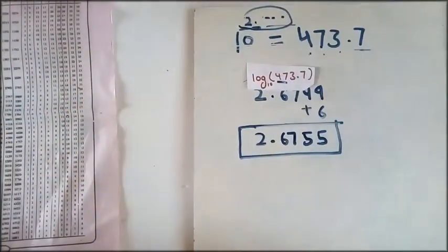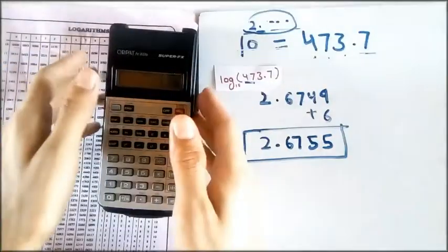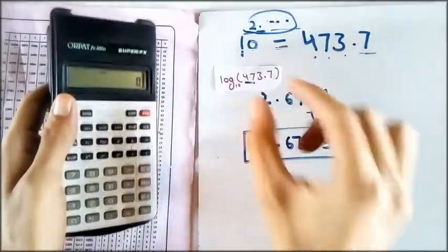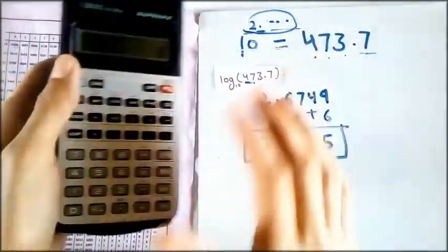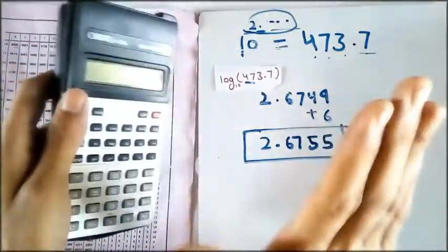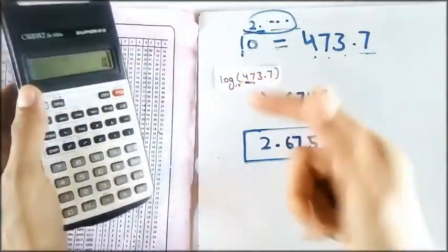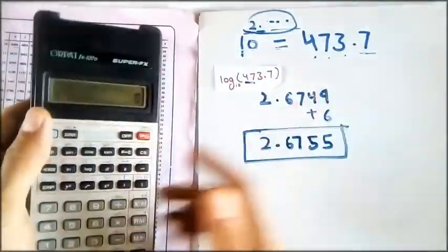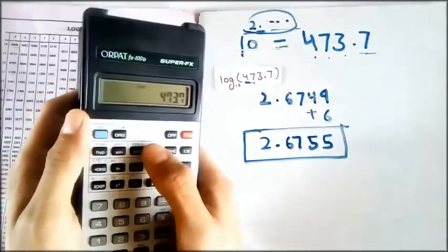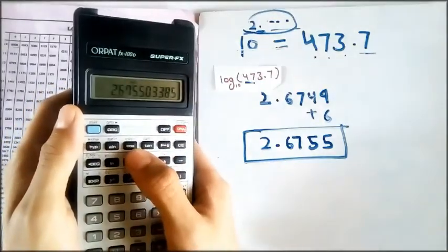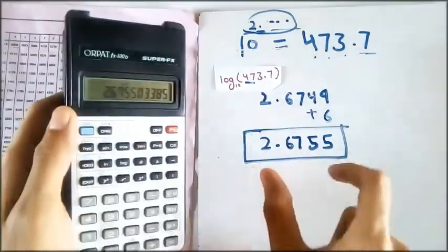This is that easy. So let's check our answer from a calculator. So this is our calculator. And as I told you that log to the base 10 is so much famous such that it got its own button on the calculator. So let's check our answer. I will write 473.7 and I will press the log here. And yes, our answer is right. That is 2.6755.